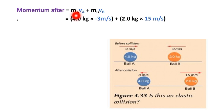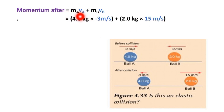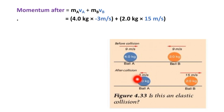Momentum of ball A after collision: mass of ball A = 4 kilogram times velocity of ball A = minus 3 meter per second. Plus mass of ball B = 2 kilogram times velocity of ball B = 15 meter per second.